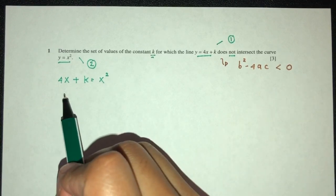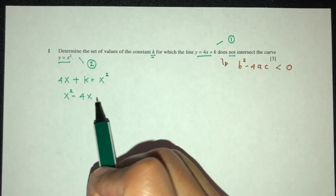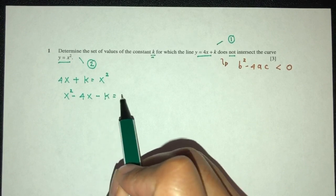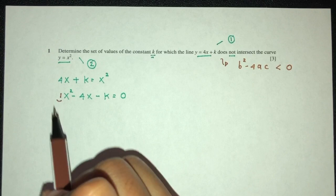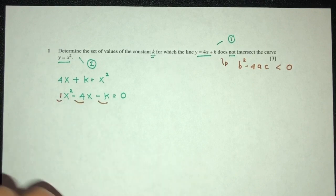So let's rearrange. We'll have x² - 4x - k have to be zero. Now value of a is 1, b is -4, and c is -k.